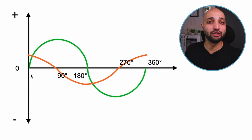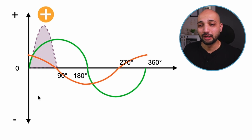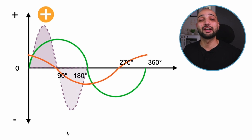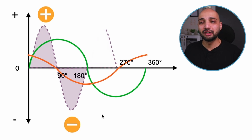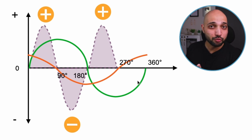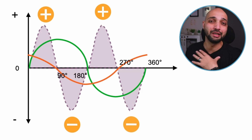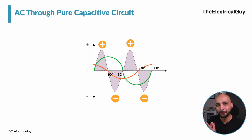Now for the interesting part: power in a capacitive circuit. From 0° to 90° both voltage and current are positive, so power is positive. From 90° to 180° voltage is positive but current is negative, giving negative power. From 180° to 270° both are negative, so power is positive again. From 270° to 360° current is positive but voltage is negative, giving negative power. We have two equal positive peaks and two equal negative peaks that cancel each other out — meaning the capacitor does not consume any actual power.